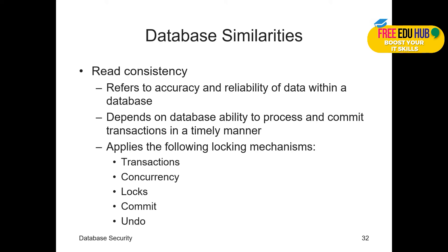Database similarities include read consistency — how the database reads data — which refers to the accuracy and reliability of data within a database. What's the point of a database if it cannot maintain reliability and integrity? That's the most important thing when saving data. When locking row data, one user saving it should not have it changed by another user until the lock is removed. There is a difference between processing and committing: processing is just making changes, while committing is saving — making the changes permanent in the database.